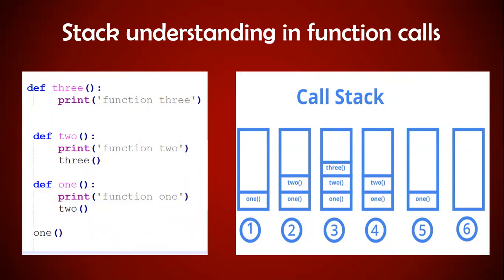At the last point, I am calling function 1. So the execution point or the interpreter starts from the function 1 call. That's why the first call will be from function 1. Function 1 internally calls function 2, so function 2 will be getting into the stack. Then after executing function 2, you get the function 3 call, so function 3 will be inside your stack. At this point, function 3 will be executed completely and it will come out, and once function 3 is totally completed, it will be taken out from the stack.